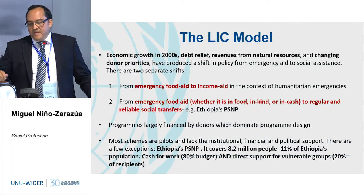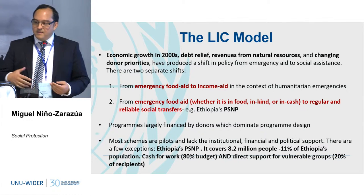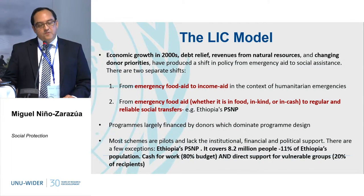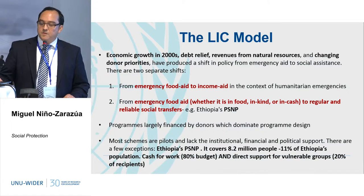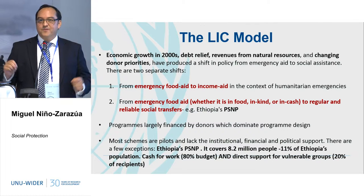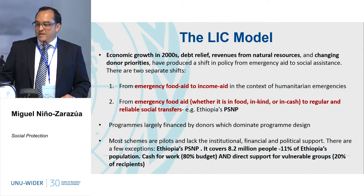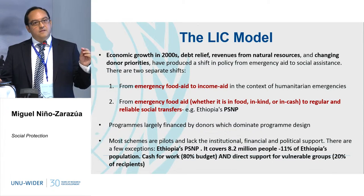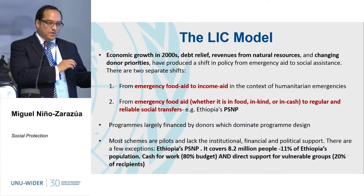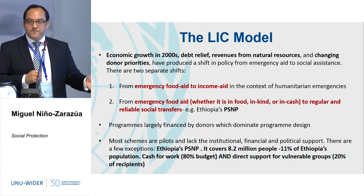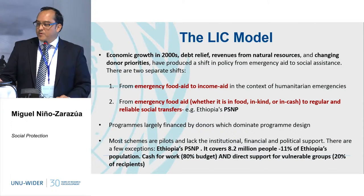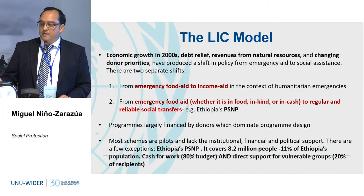The LIC model is very different — it has been a consequence and response to a number of factors. First, the economic growth that many African countries experienced in the early 2000s, but also debt relief, the discovery of natural resources, which in principle opened fiscal space for many countries to explore new policy strategies. Donors have also been changing their priorities, particularly since the 90s and the introduction of the MDGs — transitioning from a more productivist approach investing in physical infrastructure in the 60s and 70s, towards investing in human capital. All these transitions are important to understand the LIC model of social assistance in Sub-Saharan Africa.